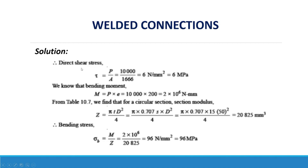The direct shear stress is τ = P / A = 10,000N / 1,666 mm² = 6 N/mm² or 6 MPa.